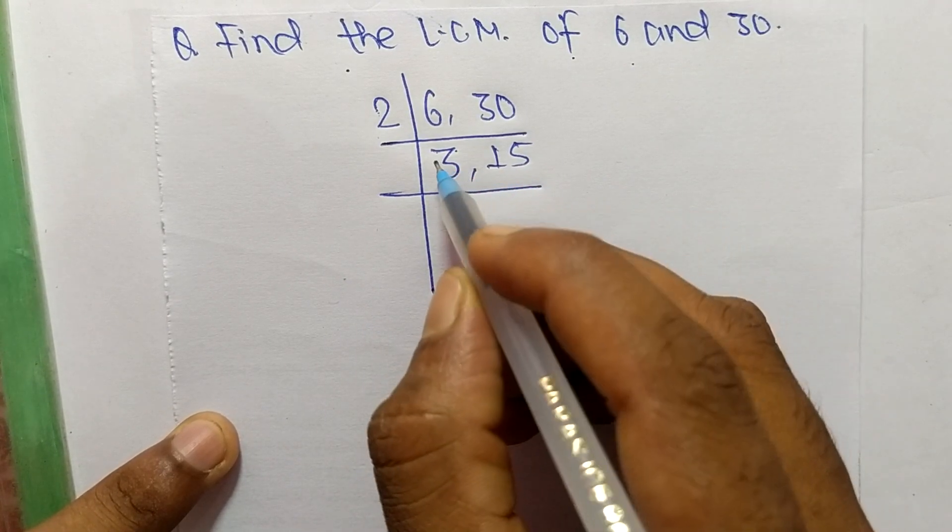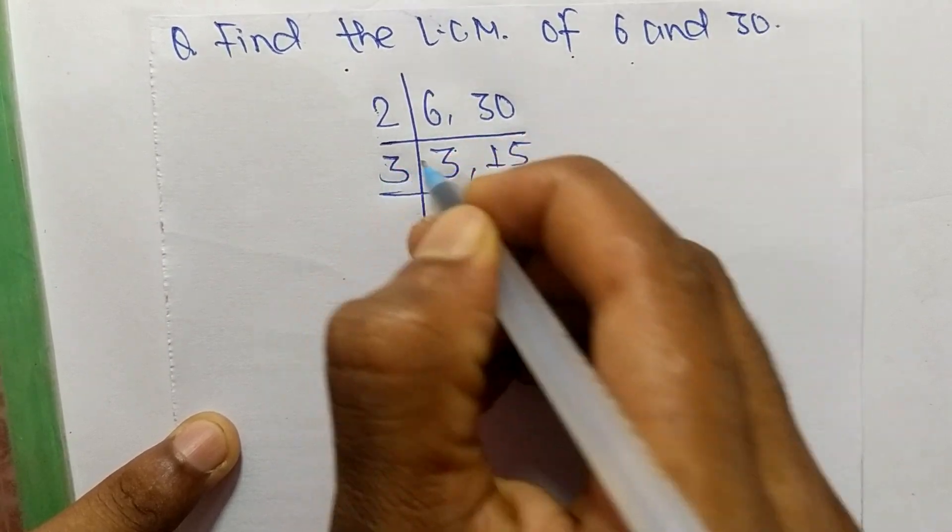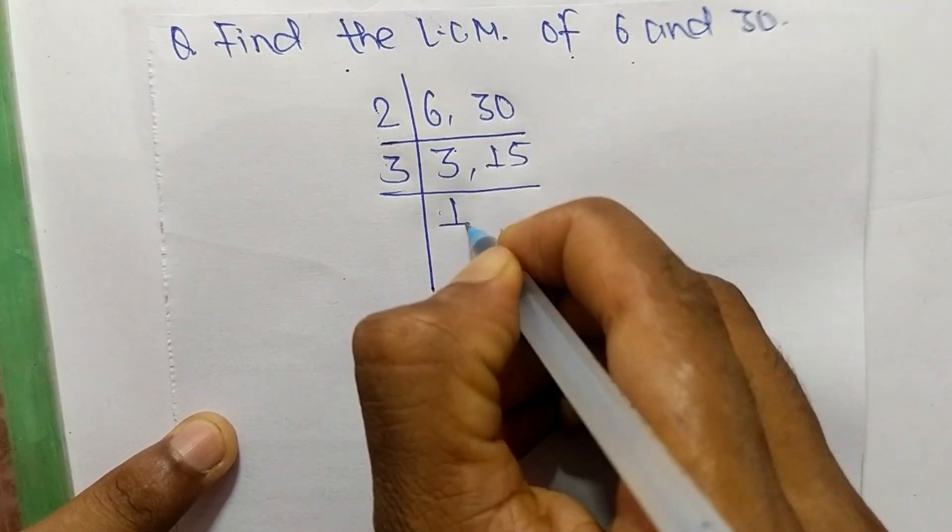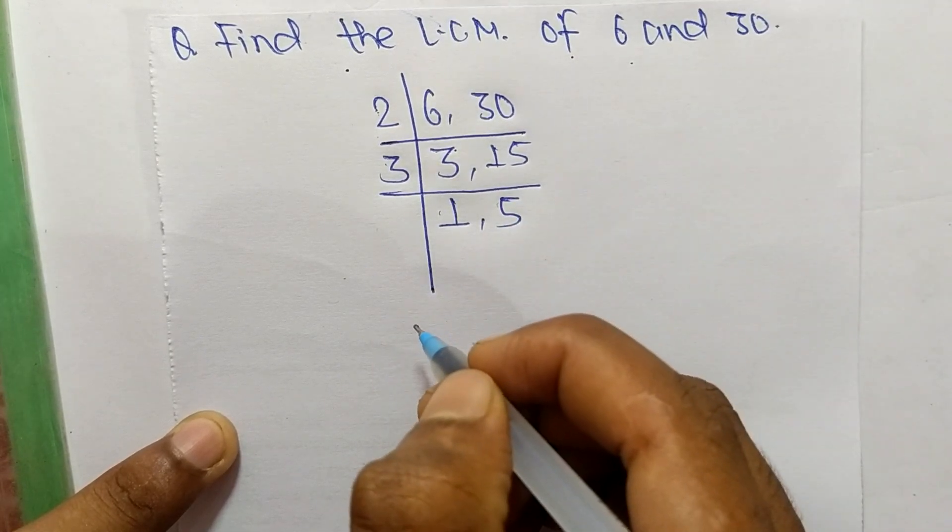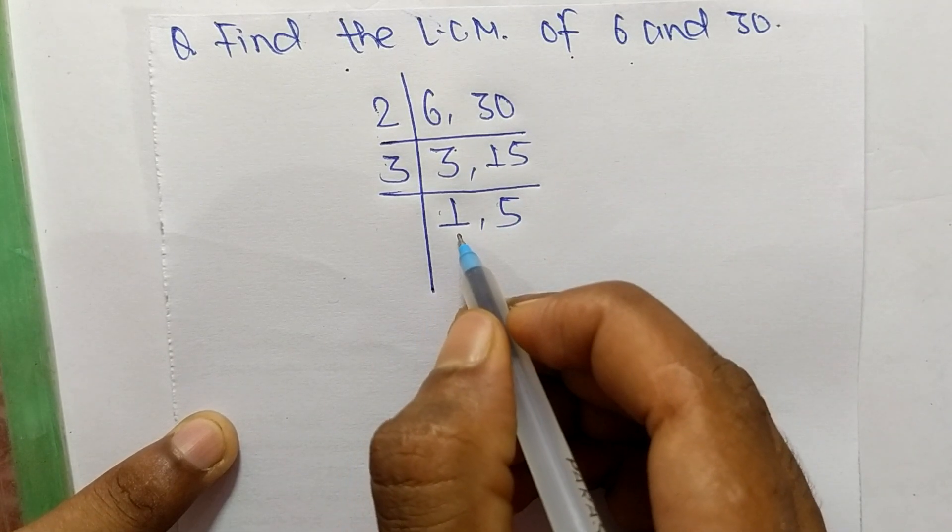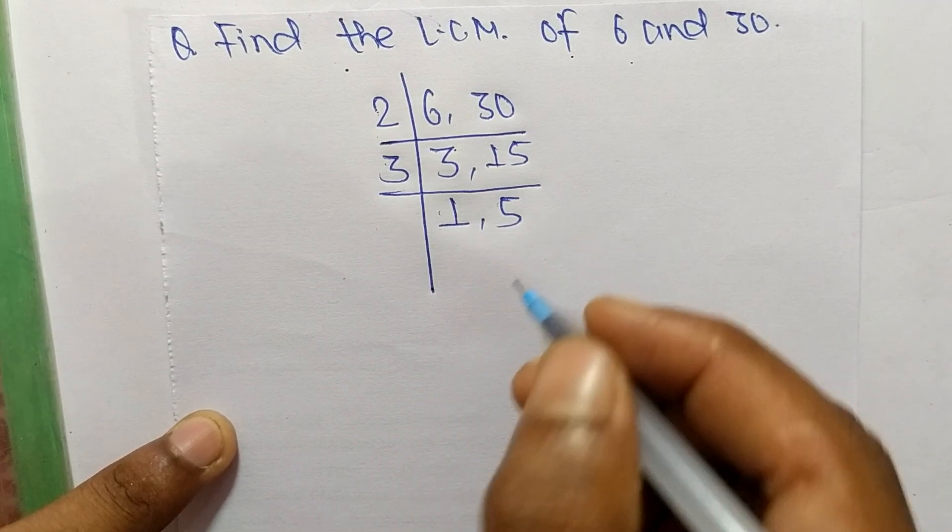So we take the number greater than 2, which is 3. 3 times 1 equals 3, and 3 times 5 equals 15. Now we have 1 and 5, which are not exactly divisible by the same number.